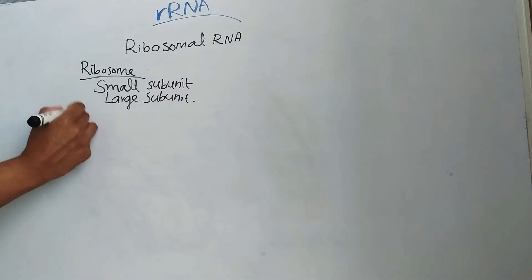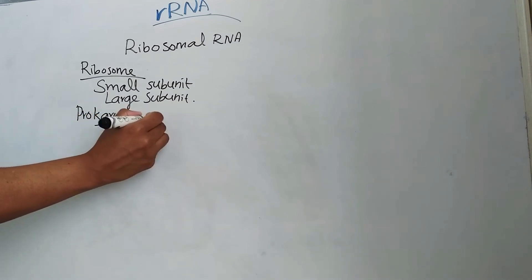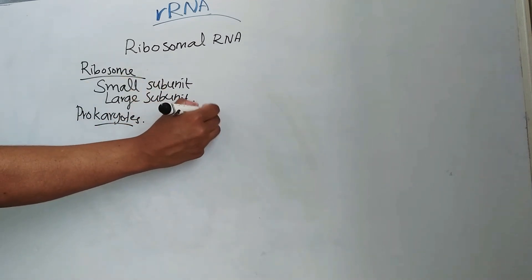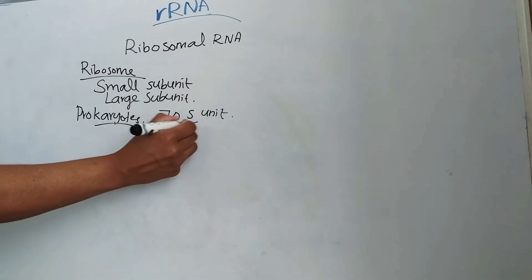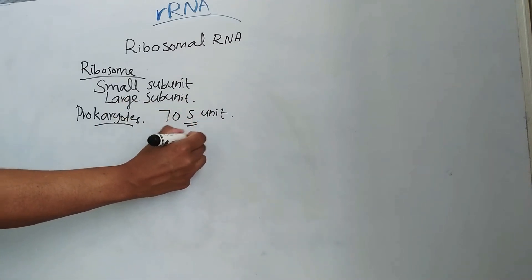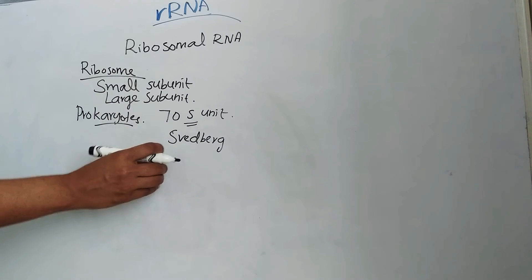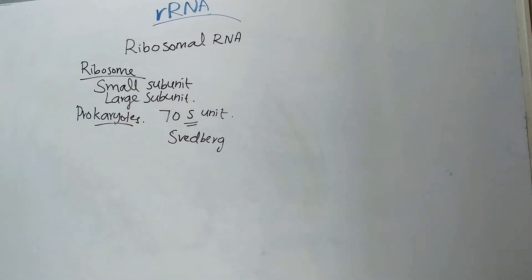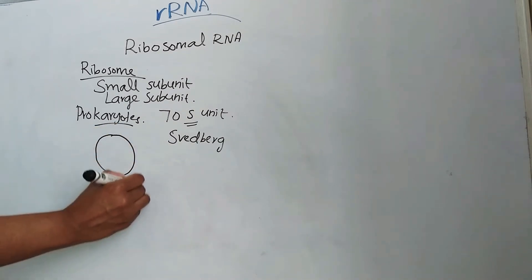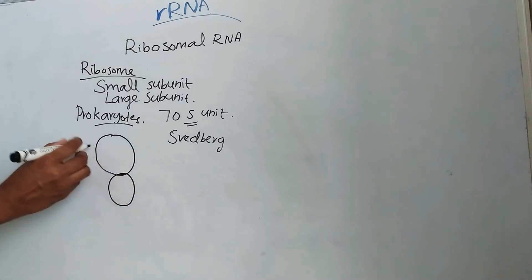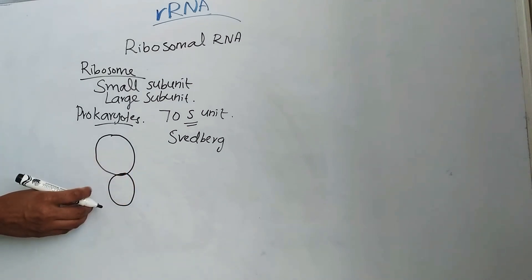In prokaryotes, this ribosome is of 70S unit. Here the S is Svedberg unit. Svedberg unit is a unit for sedimentation coefficients. It depends on molecular weight and size. So this 70S is made up of 50S and 30S.